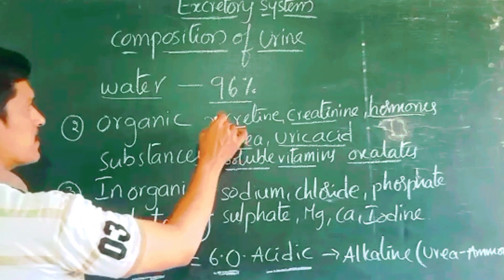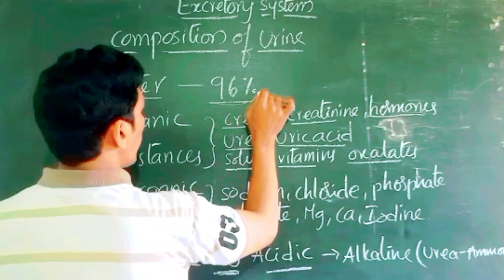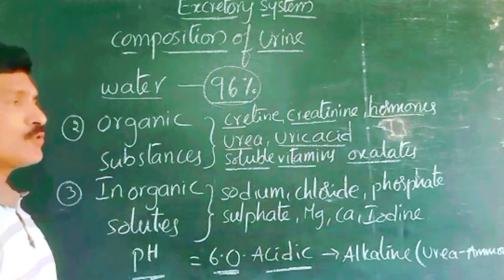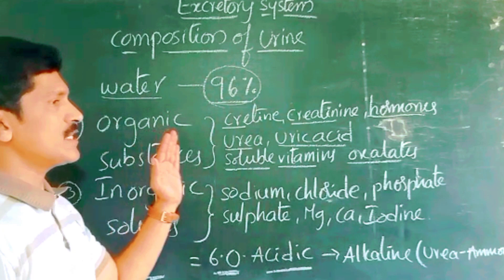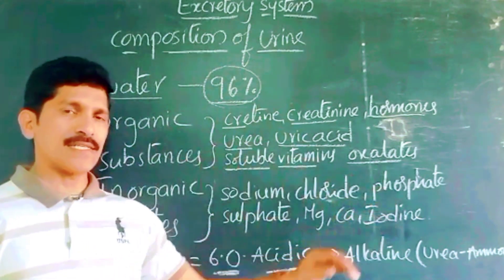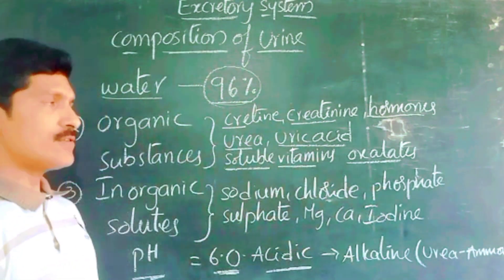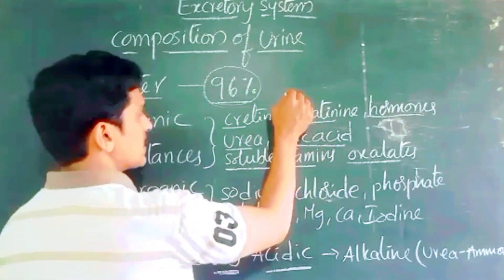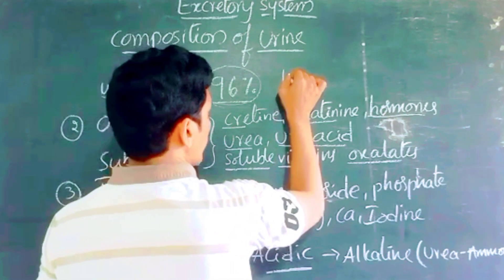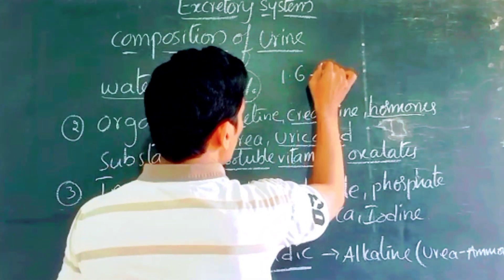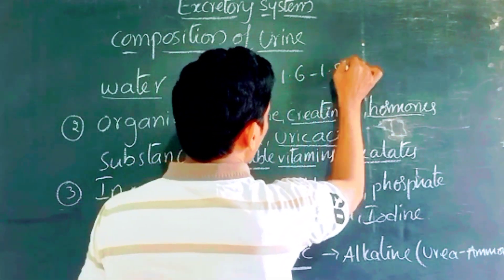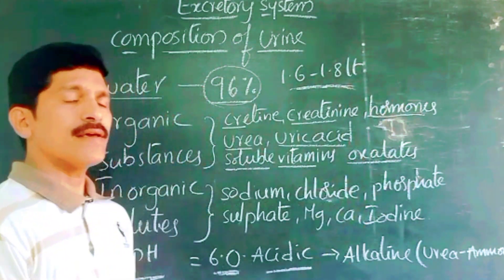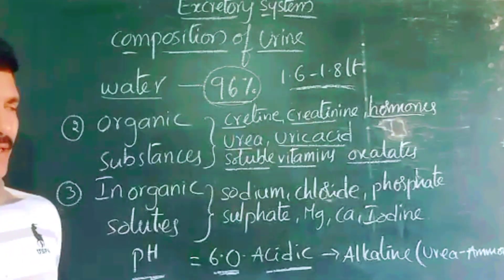The 96% water present in the urine helps to excrete all these waste materials. As for urination, a healthy person can excrete 1.6 to 1.8 liters of urine per day.